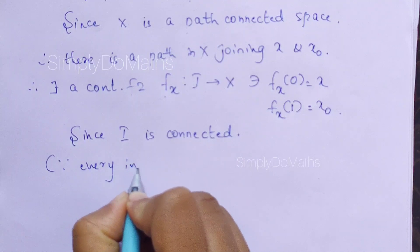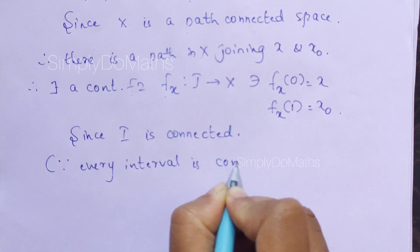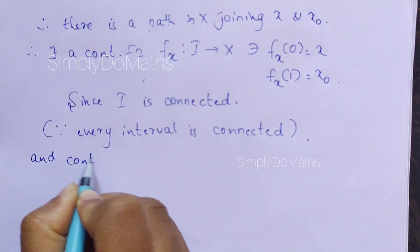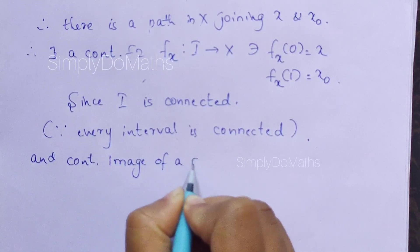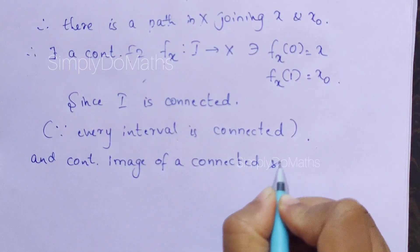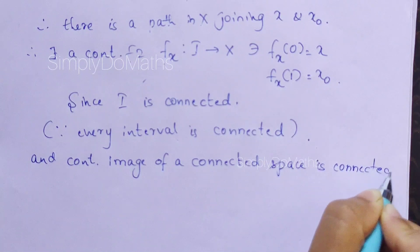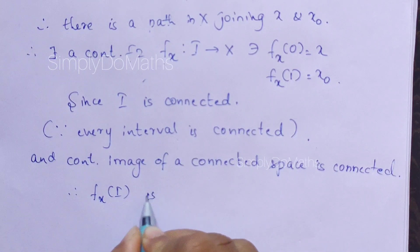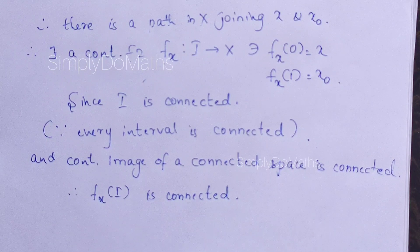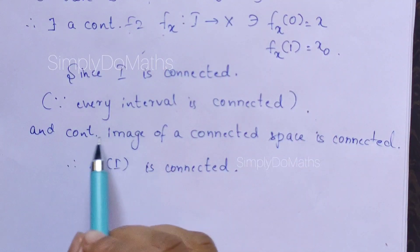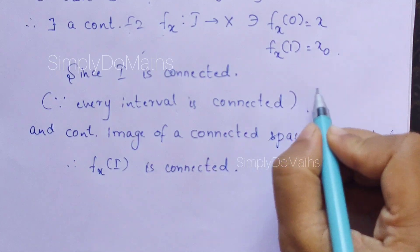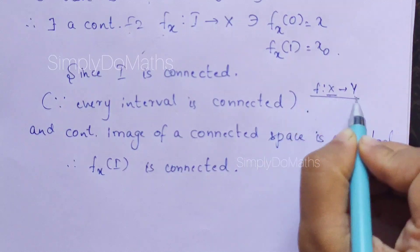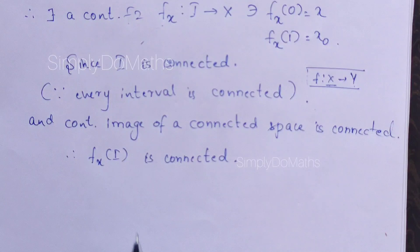I can write the reason: every interval is connected. Since I is connected, and as you know, the continuous image of a connected space is connected — that we have proved in one of our previous sessions — therefore f_x of the domain I is connected. The theorem states: if f from X to Y is a continuous function and X is connected, then f(X), that is Y, will be connected. So f_x(I) is connected.